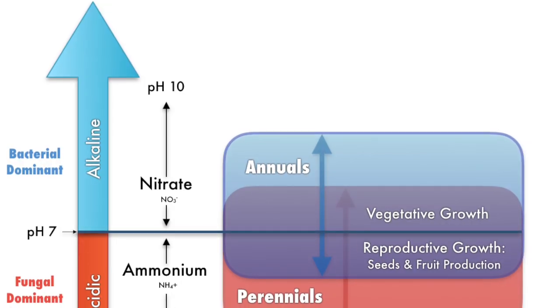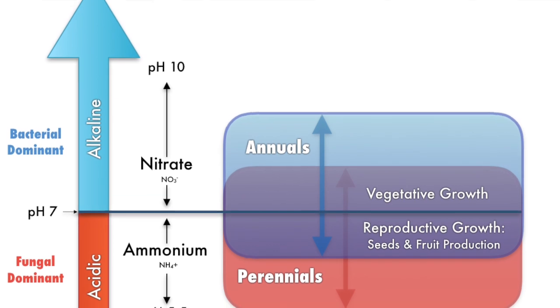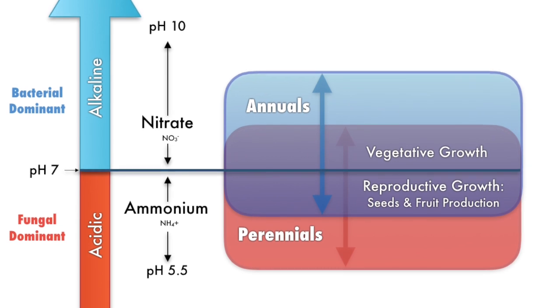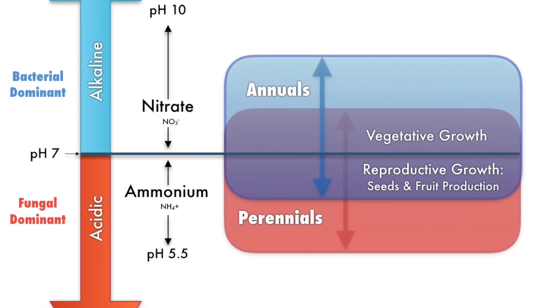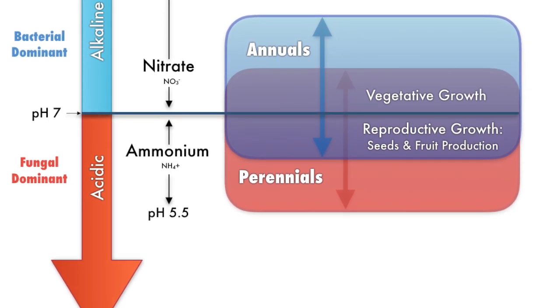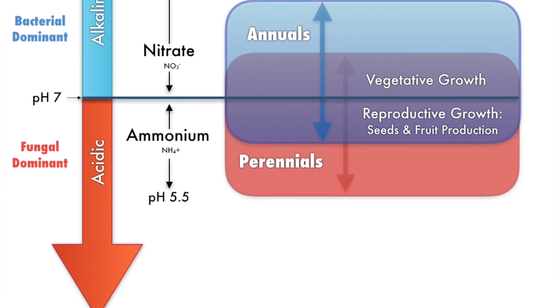You've got flowering and fruiting, and then you've got vegetative growth. Vegetative growth is going to be driven by nitrates, and flowering and fruiting is going to be driven by ammonium. These are actually associated with different pH levels. This is why when you go to the store and look at fertilizers, you see there's a 'growing' formula and then a 'blooming' or 'fruiting' formula — that is the difference. It's a pH difference, and with compost it's all the difference.